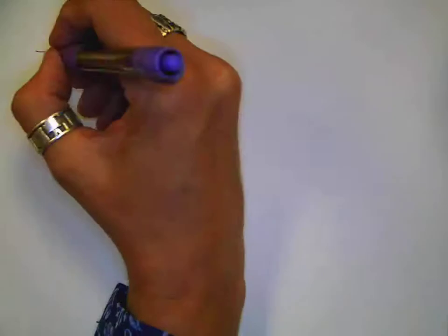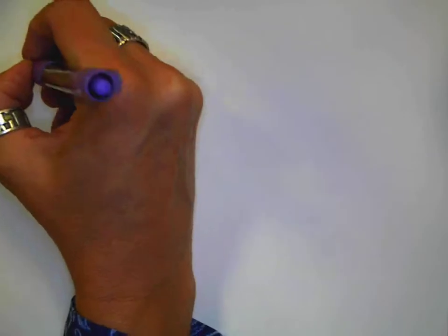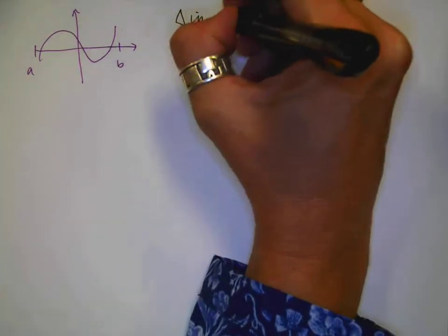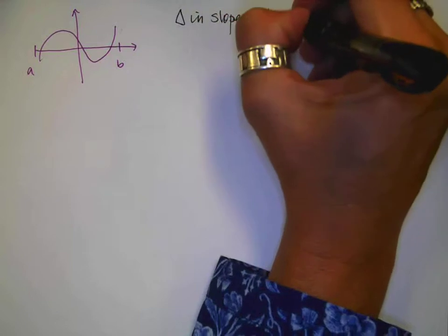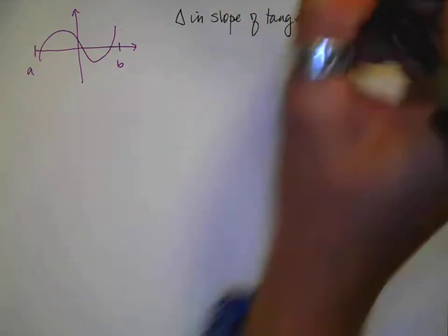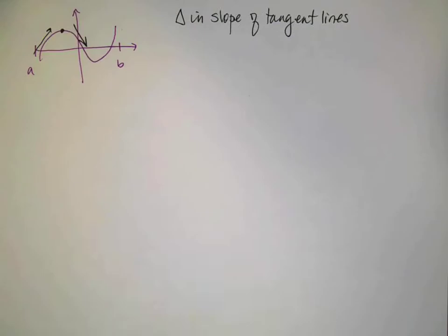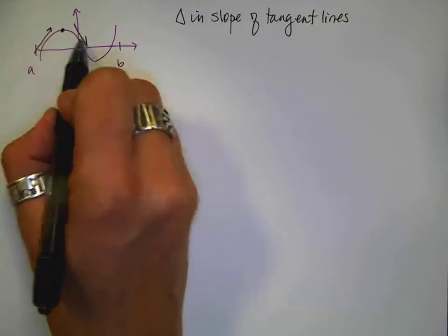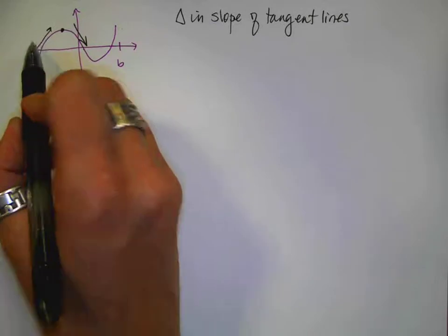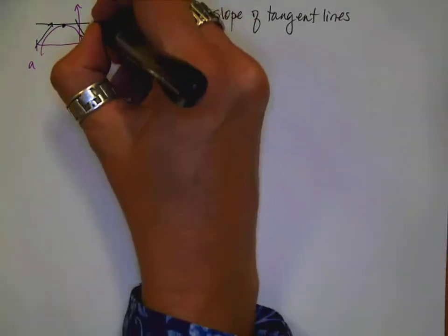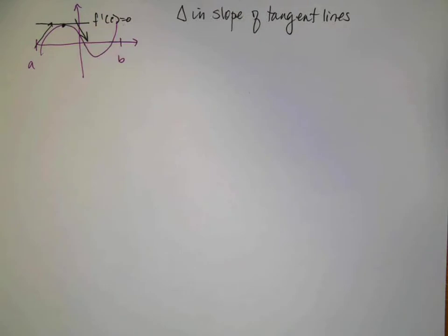I'm going to illustrate this with a little graph. Let's say I have this function, and here's my interval from a to b. When we talk about extrema, remember that we're really looking at a change in the slope of our tangent line. So for example, the tangent here is positive, the tangent here is negative, which means that in the interval from here to here, since there is a change in sign of my derivative, I have potentially an extrema, because at that point the derivative is going to equal zero.